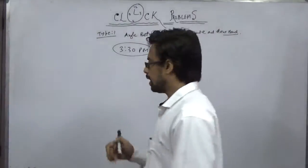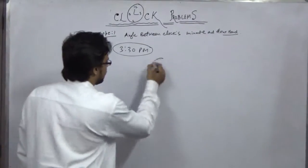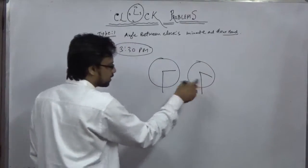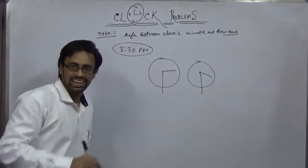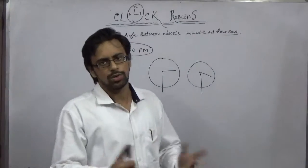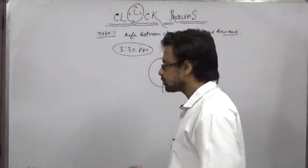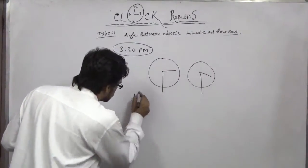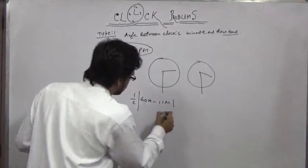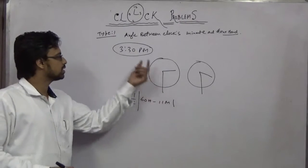Simple. Now you might think it is 90 degrees — but no, it is not 90. Is the angle like this or like that? So it is less than 90 degrees. But how do we find it? I will tell you the formula. Now comes the formula.